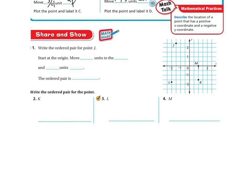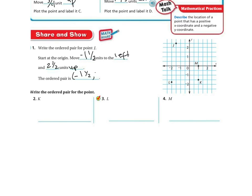Let's do some share and shows. This one says write the ordered pair for J. They've already plotted the points and just want us to write them. Start at the origin — here's my J. Notice they've labeled the divisions, so each space is actually a half. Moving to get to J, I'm moving 1 and a half units to the left, so it's negative 1½. And moving up, I'm moving 2 and a half units up. So my ordered pair is negative 1½ and 2½.